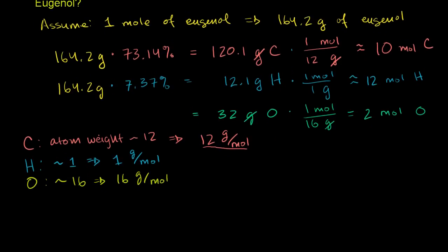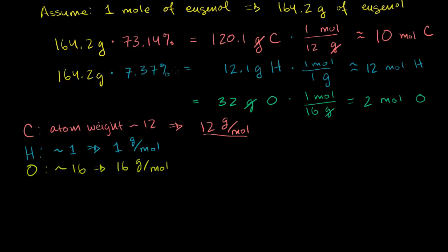So we now have the ratio. For every molecule of eugenol, we have 10 carbons, 12 hydrogens, and 2 oxygens. This gives us the molecular formula: C₁₀H₁₂O₂.